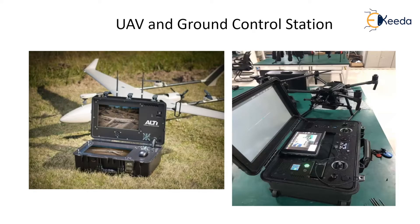A drone is always accompanied with a ground control station, or GCS. The current slide shows a fixed-wing drone and a multi-rotor drone along with the GCS. The GCS provides control of the drone, serves as a communication link between the pilot and the drone, and collects all the video and telemetry data sent by the drone. The GCS also controls the camera or any payloads installed on the drone for particular missions.